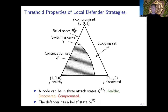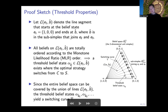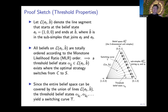Previously we only had healthy and compromised states, so the belief space was just the unit interval from zero to one. In this case we have a two-dimensional belief space — an equilateral triangle simplex. This means we don't have a single threshold but rather a threshold curve, or switching curve, that partitions the space into two regions: one where it's optimal to wait and one where it's optimal to trigger the response. The intuition is that on each line from the left corner of the simplex there must be a threshold, and connecting all of these together gives us the switching curve. This curve can be efficiently estimated by stochastic approximation, very similar to the earlier algorithm.